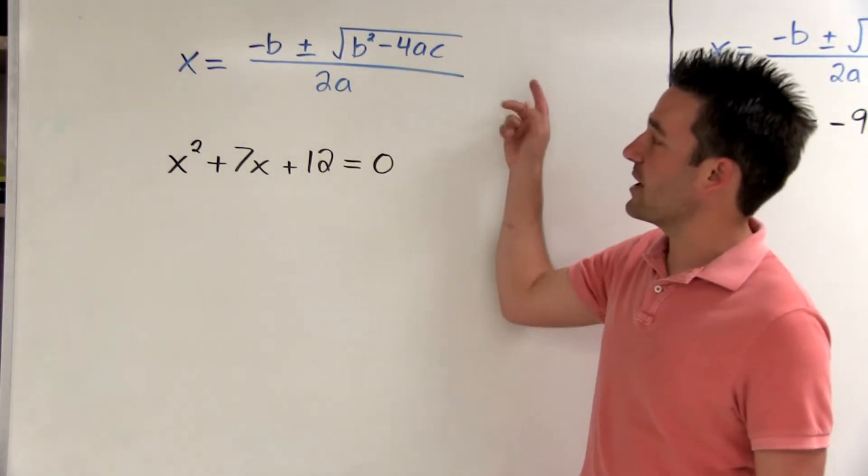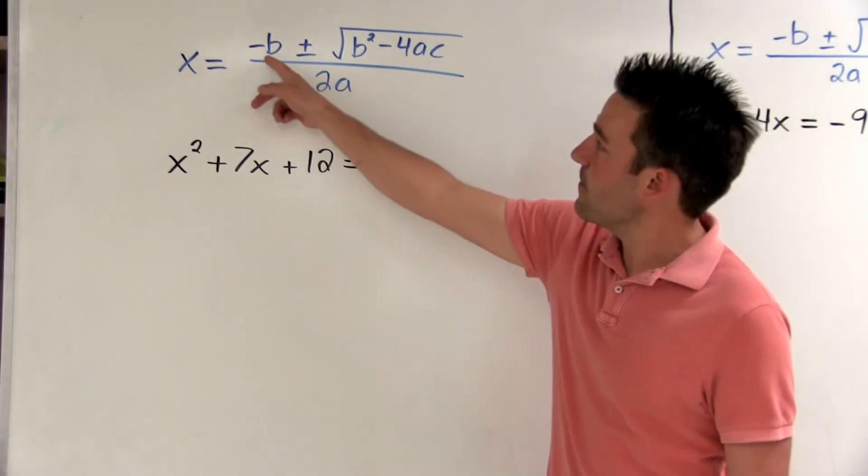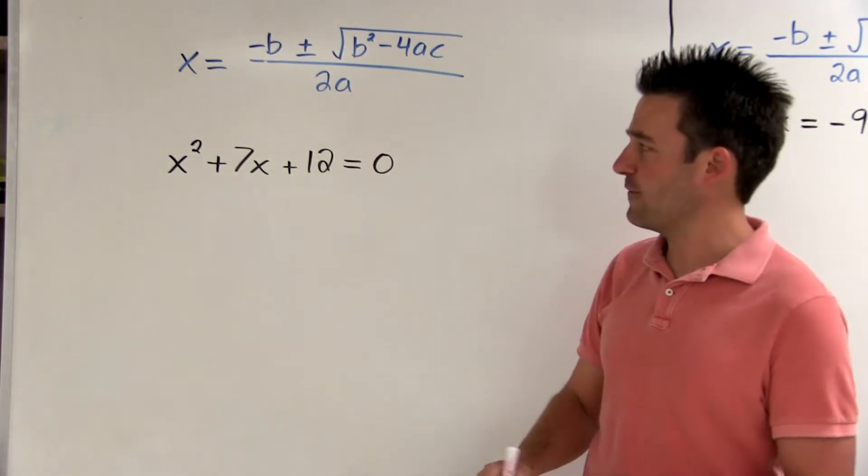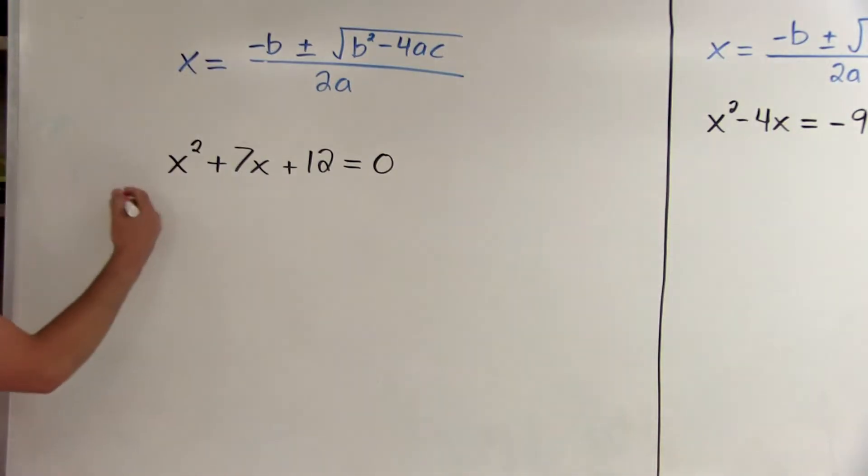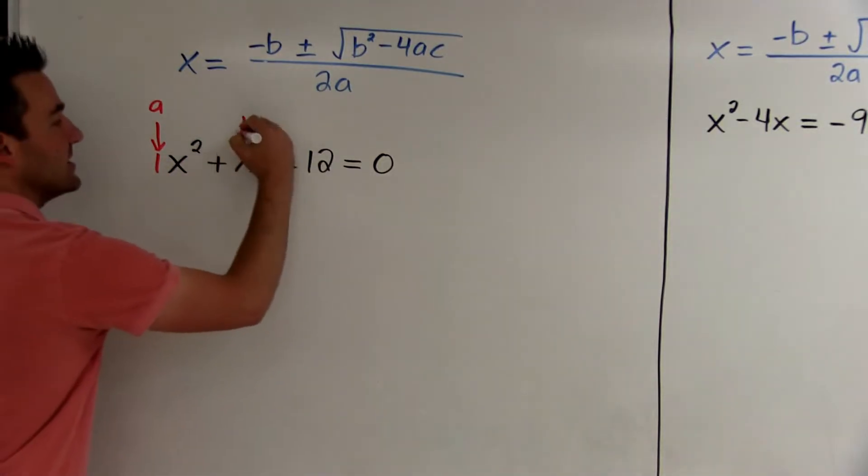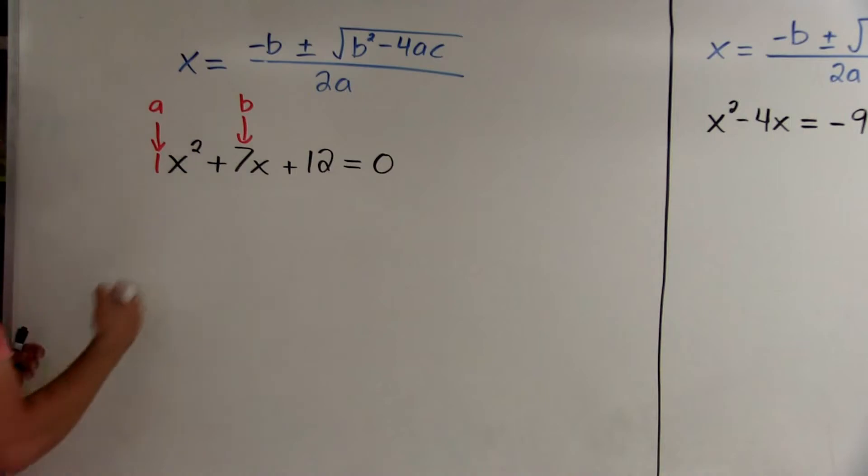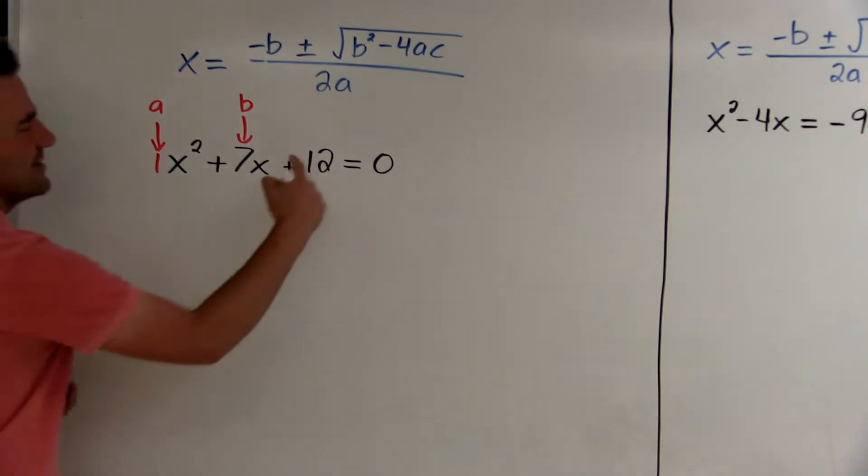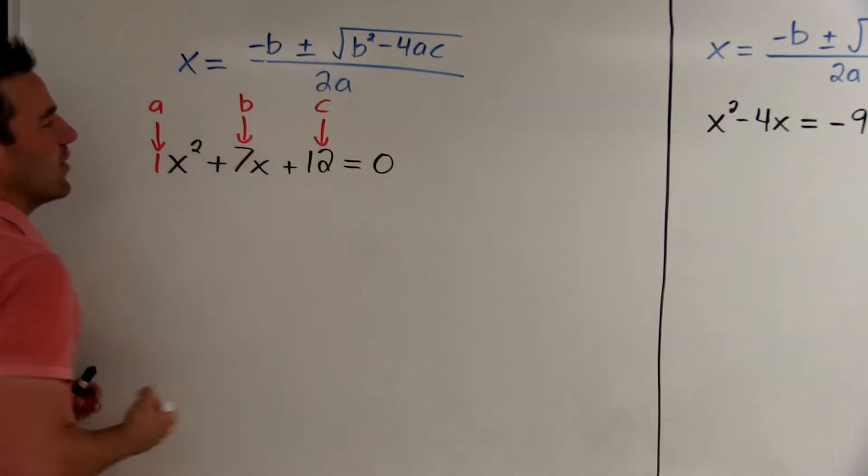So here's the quadratic formula. It uses a, b, and c. a and b are coefficients, so whatever the coefficient is here, that's a. And when it's not written, it's 1. So the coefficient of a is 1, b is 7, and c is this constant at the end. c is 12.